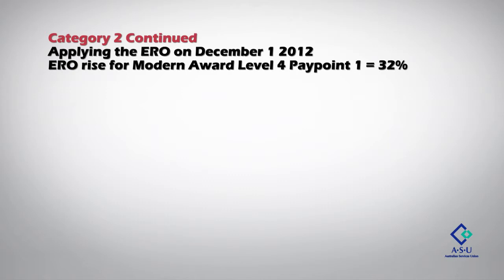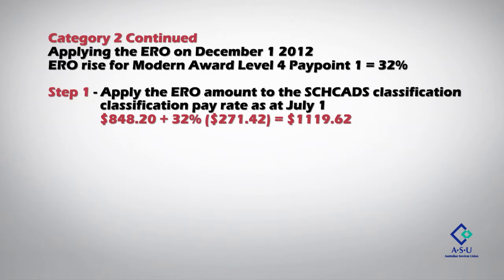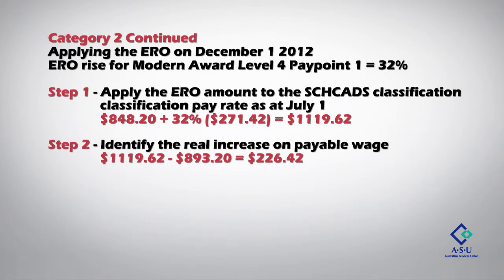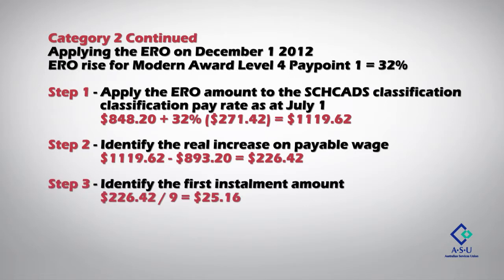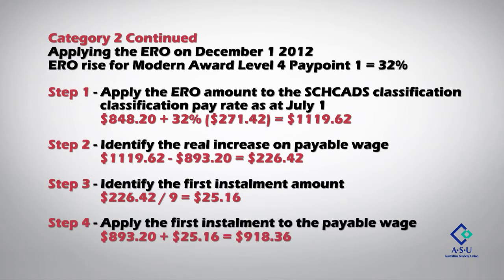From December 1, 2012, you apply the ERO. Step 1: apply the ERO amount to the SCHADS classification to find the total SCHADS wage increase by 2020 — $848.20 plus 32% ($226.42) equals $1,119.62. Step 2: identify the real increase on the payable wage — $1,119.62 minus $893.20 equals a $226.42 pay rise. Step 3: divide the total increase by the number of years — $226.42 divided by 9 years equals $25.16. Step 4: apply the annual instalment to the payable wage — $893.20 plus $25.16 equals $918.36.